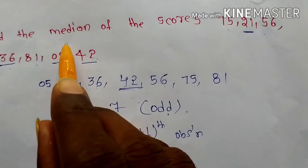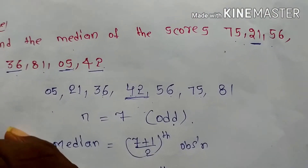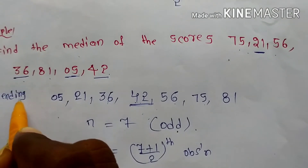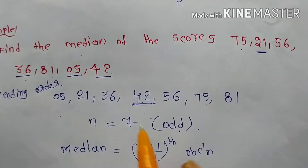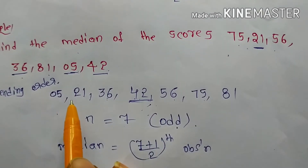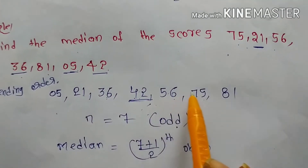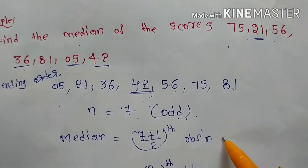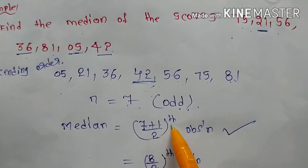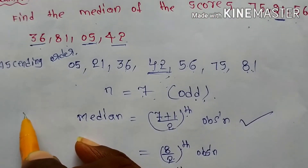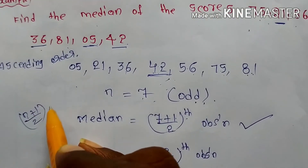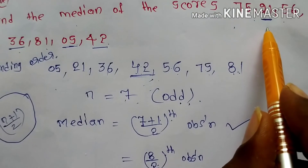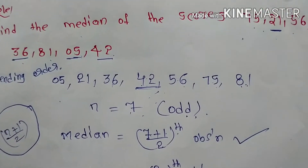So 42 is the median. The steps are: first write the scores in ascending order, then count how many numbers there are, then apply the formula (n+1)/2 and substitute n. This formula is used only for an odd number of observations.